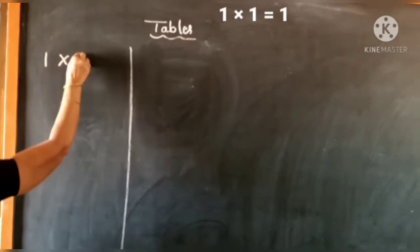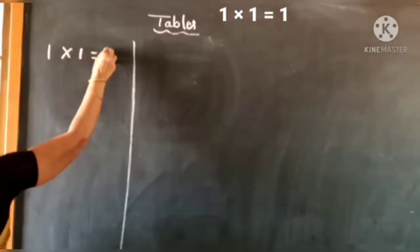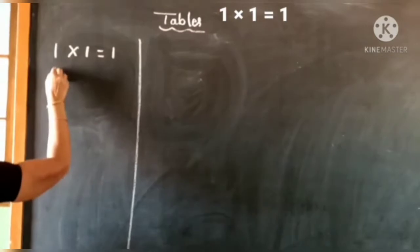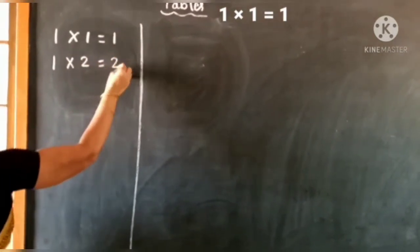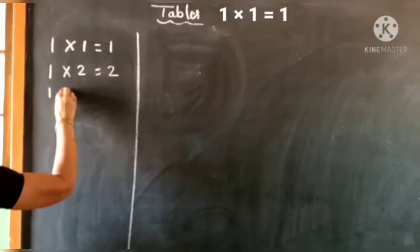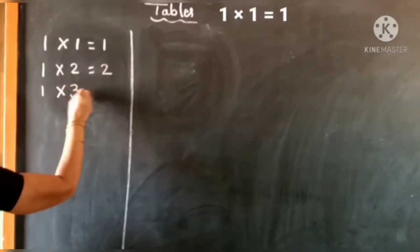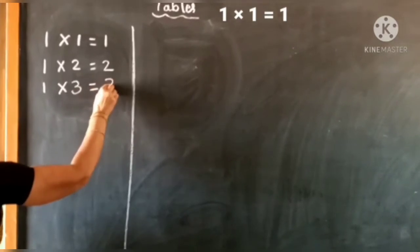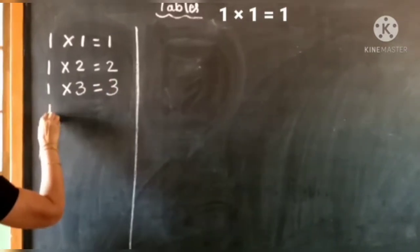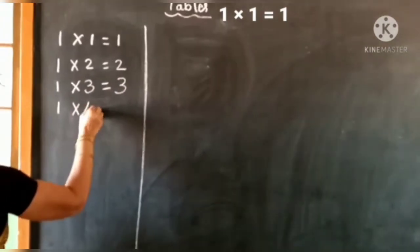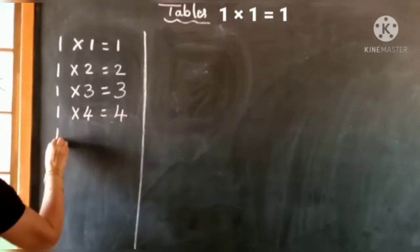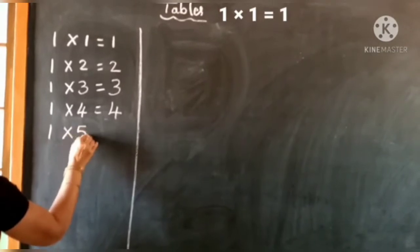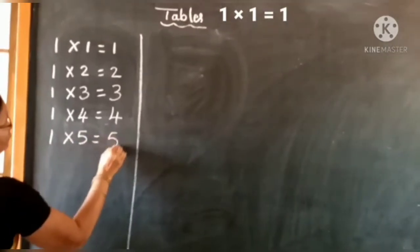One ones are one, one twos are two, one threes are three, one fours are four, one fives are five.